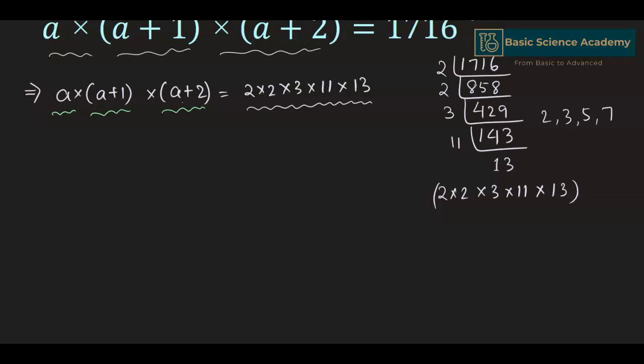We already have 11 and 13, which are consecutive numbers. The multiplication of 2, 2, and 3 is equal to 12, which is again the consecutive number of 11 and 13.